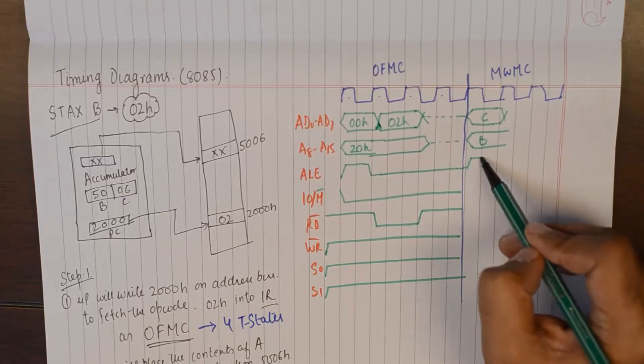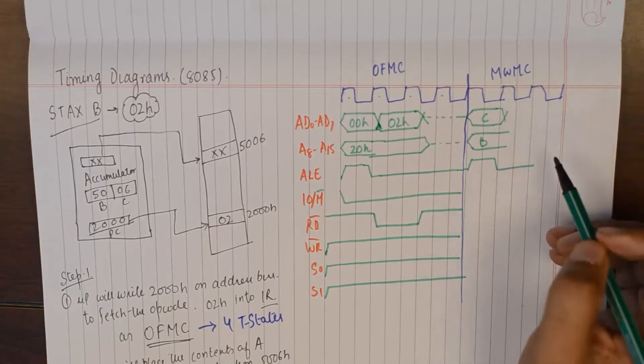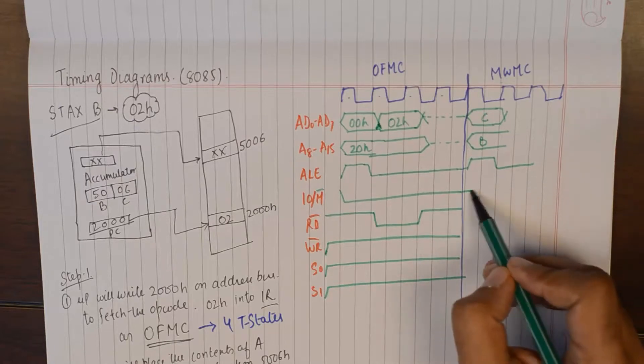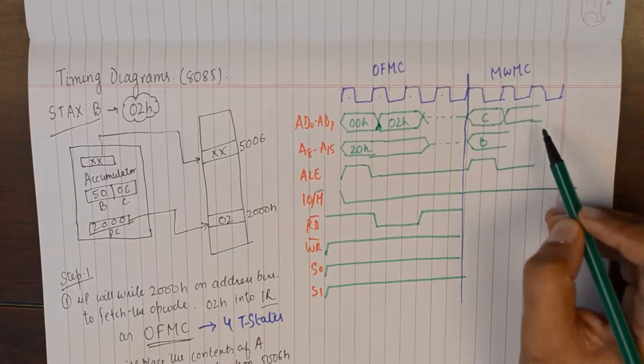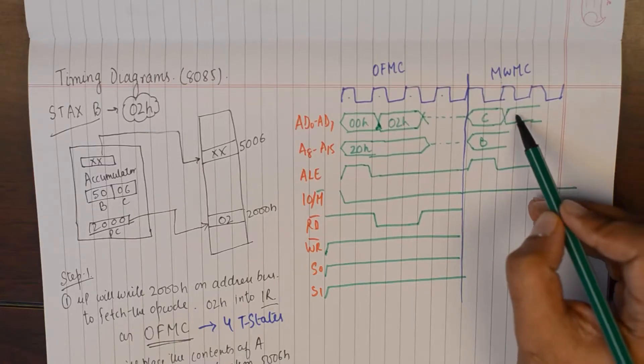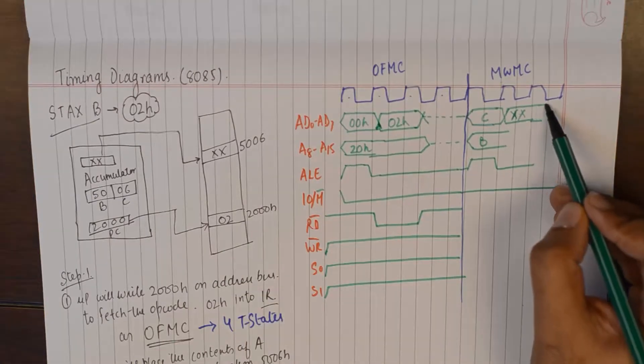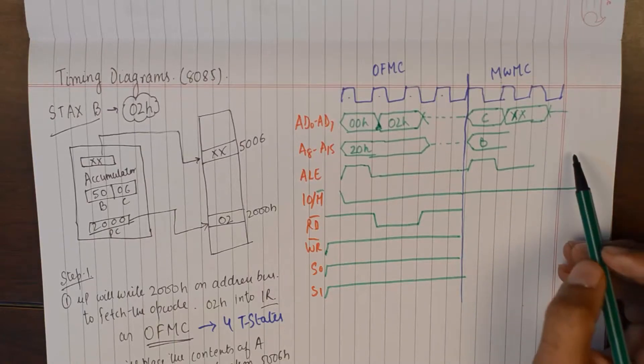And of course in the first T state of this machine cycle we will make ALE 1. And in the second T state we will write the contents of accumulator which are XX by the way. And then we will place it in the memory location in the third T state.